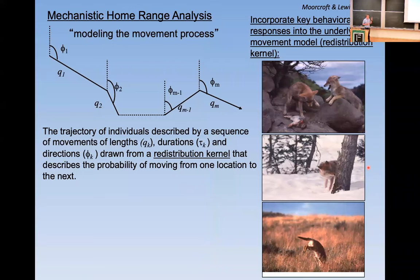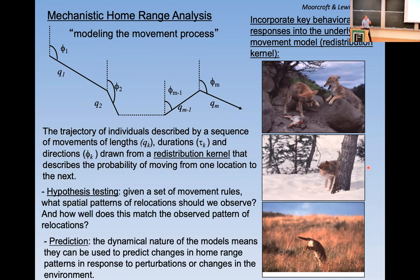And in essence, the idea that we were thinking about was this idea of modeling the movement process. That term actually comes from Otso Ovaskainen several years later. But it's essentially the idea that the home ranges of the animals is an emergent property arising from interactions, in this case, mediated by scent marks. And I was excited as an ecologist because I felt like this provided a framework for real hypothesis testing, where you could posit different movement rules and ask what spatial patterns of relocation should we observe and how well do those match the relocations. And it also offers opportunities for prediction because you have an underlying dynamical model.